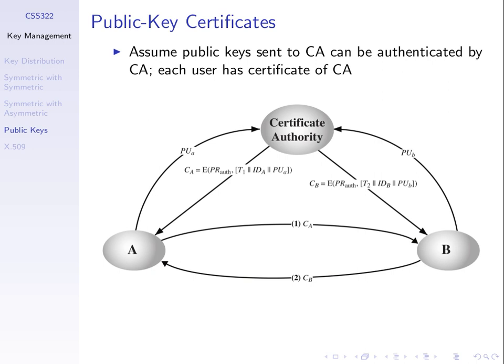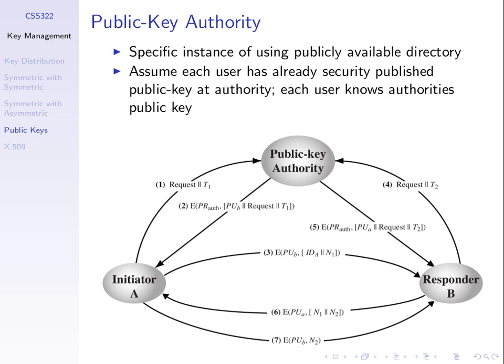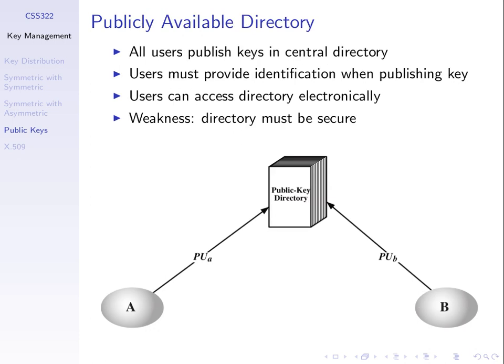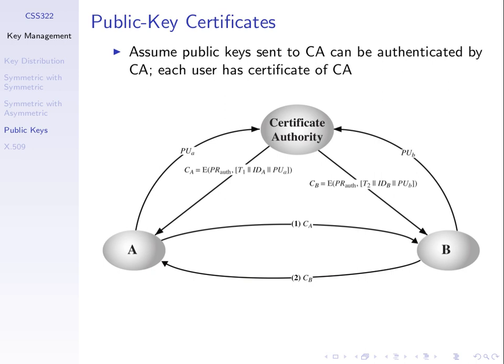Here we're showing the manual step of exchanging a public key with the authority. In the previous diagram only the automatic steps were shown; the manual exchange wasn't shown explicitly. In this diagram, we're showing both. The manual exchange happens before we do anything automatically across the network. The automatic steps are just steps one and two.